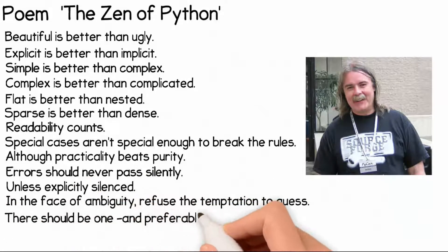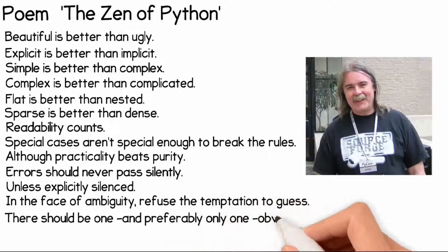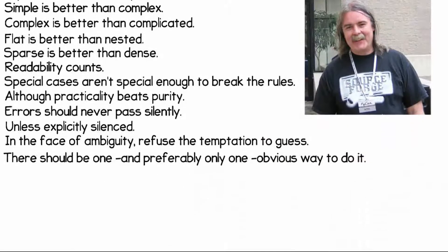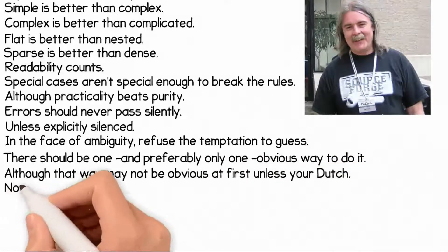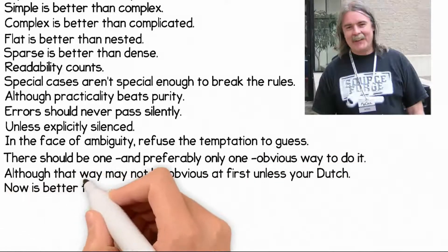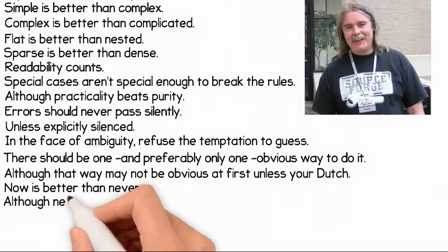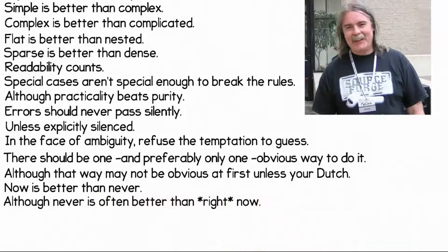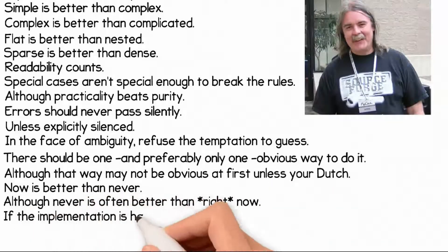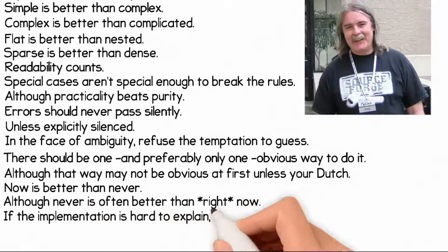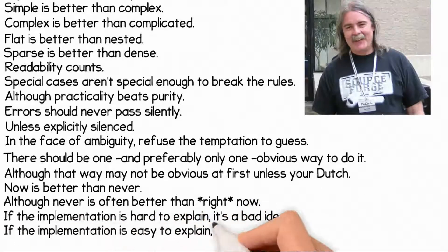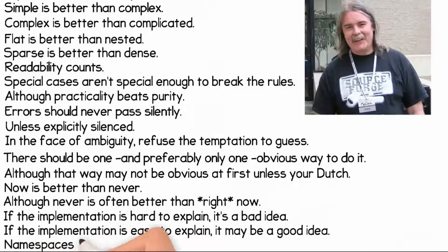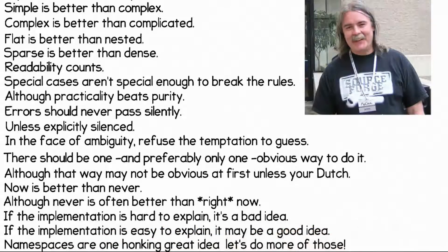There should be one, and preferably only one, obvious way to do it. Although that way may not be obvious at first unless you're Dutch. Now is better than never. Although never is often better than right now. If the implementation is hard to explain, it's a bad idea. If the implementation is easy to explain, it may be a good idea. Namespaces are one honking great idea — let's do more of those.